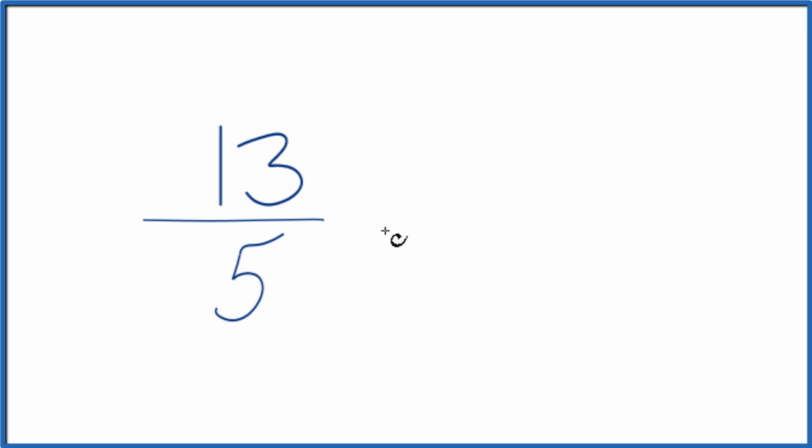So 5 goes into 13 two times, because 2 times 5 is 10, and then we'd have 3 left over. Just bring the denominator across. And 13 fifths, this improper fraction, does equal the mixed number 2 and 3 fifths.